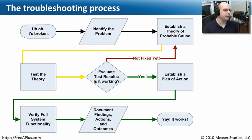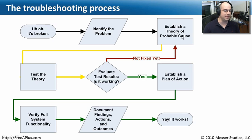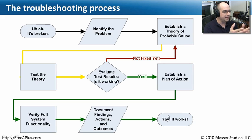Graphically, this process starts with identifying the problem, then establishing a theory. We test the theory and evaluate the results. If we didn't fix the problem, we go back to figuring out what the problem really is and come up with other ideas. If we did fix it, we figure out how to roll out the fix, verify that it worked, document everything, and confirm the problem is resolved.